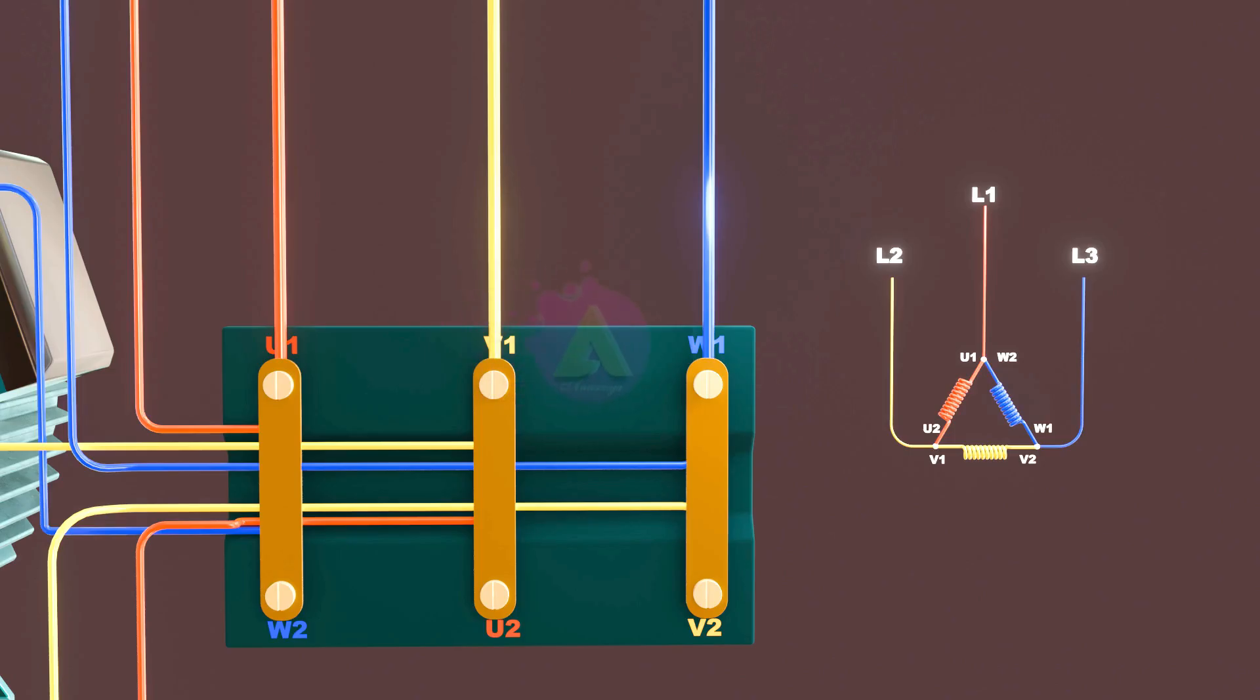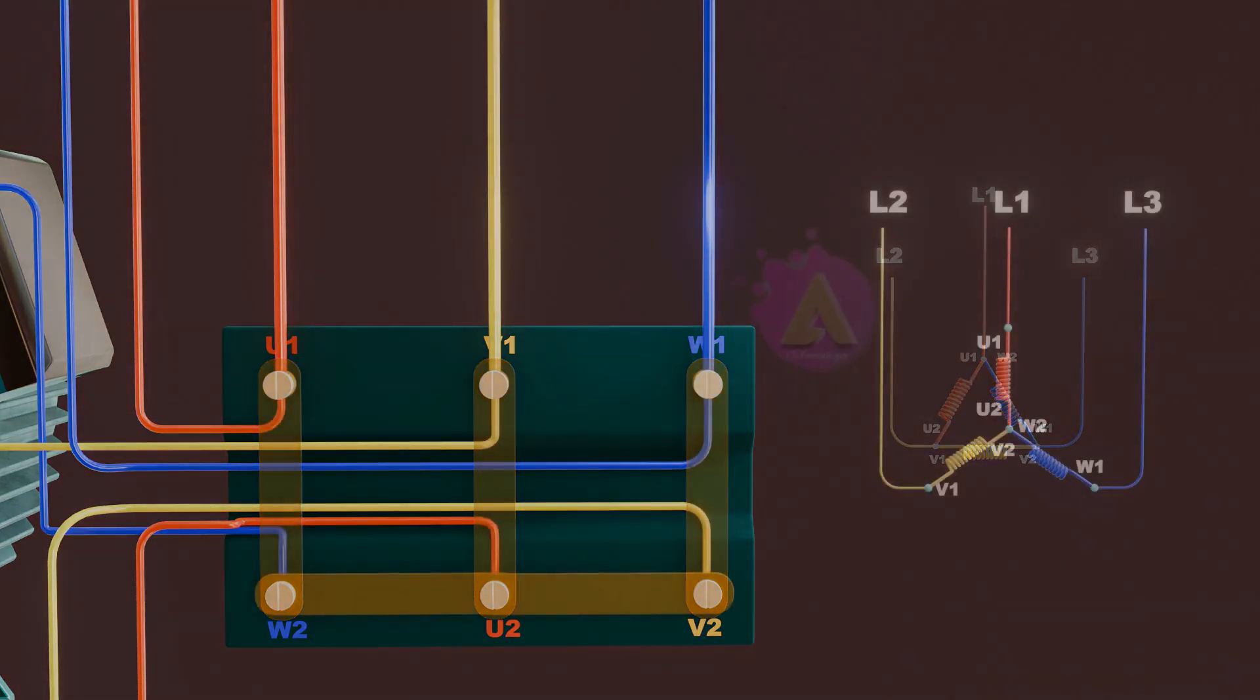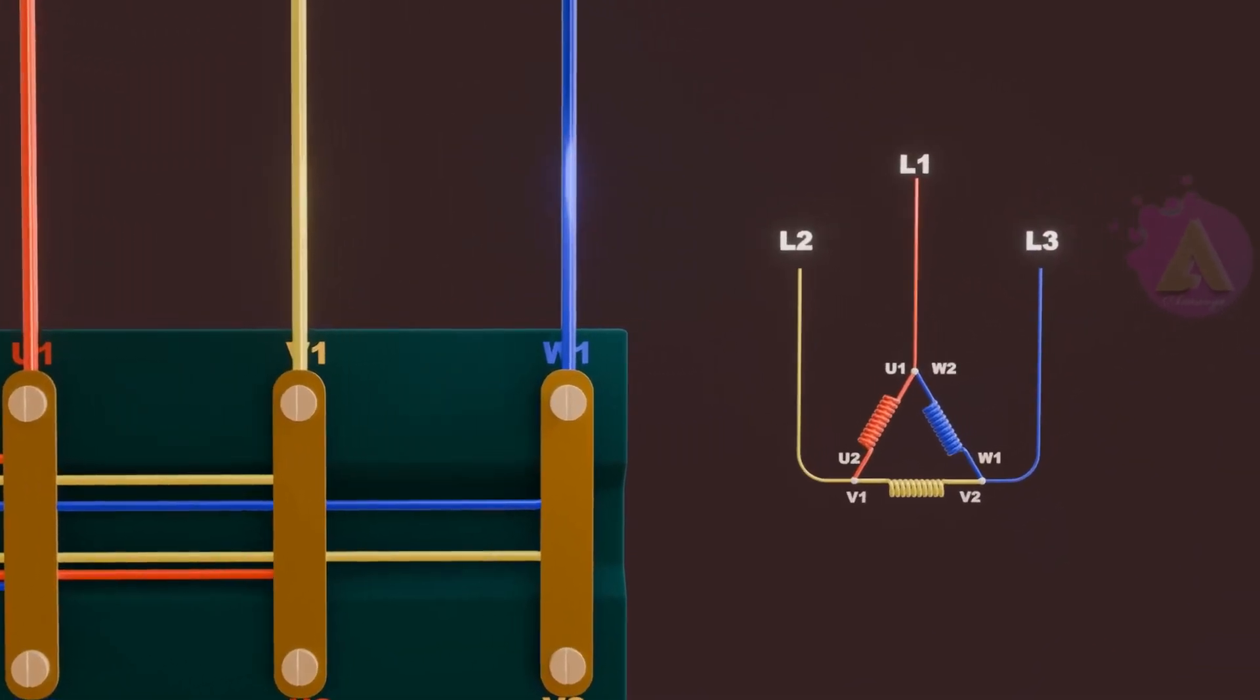Due to the design differences, the current flowing in the star and delta configurations is very different. Let's have a look at the difference between the star and delta configurations.